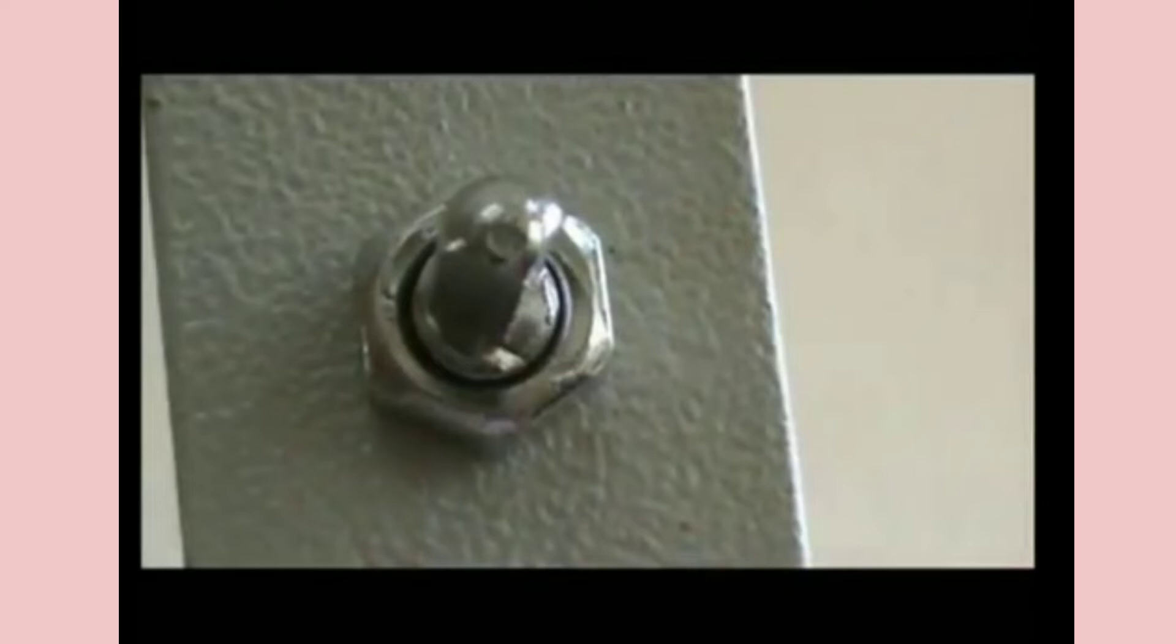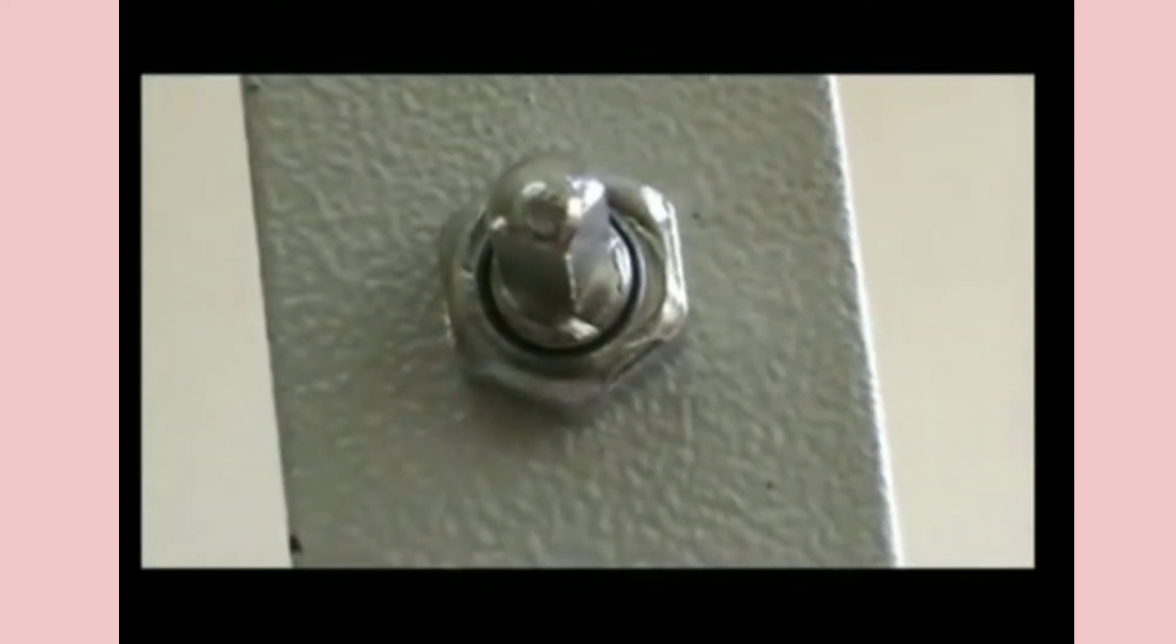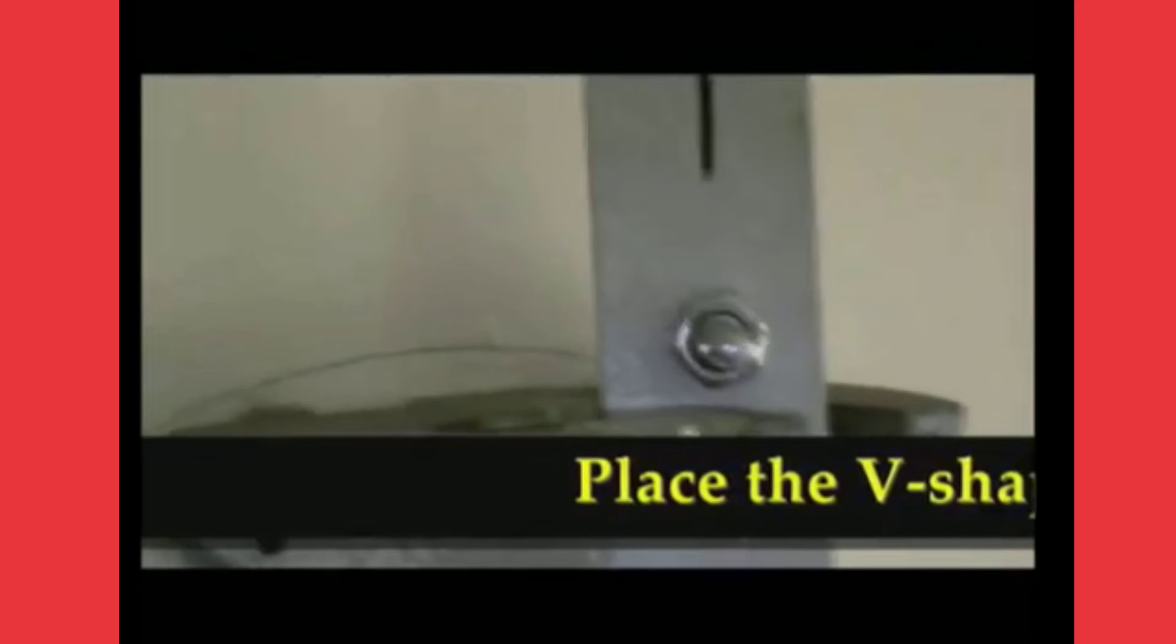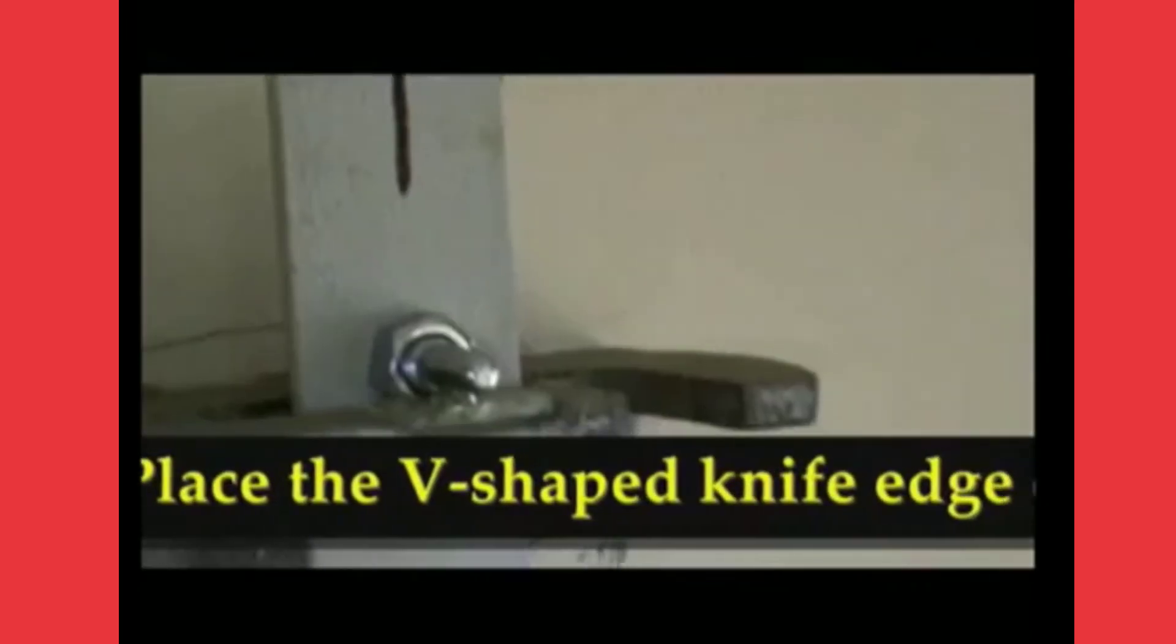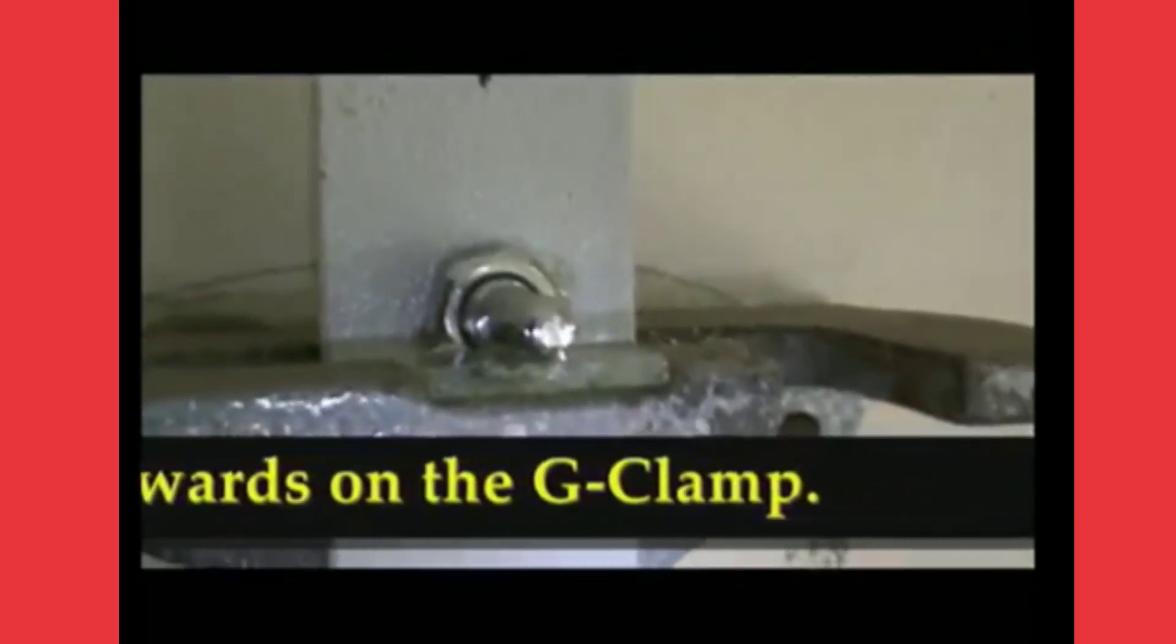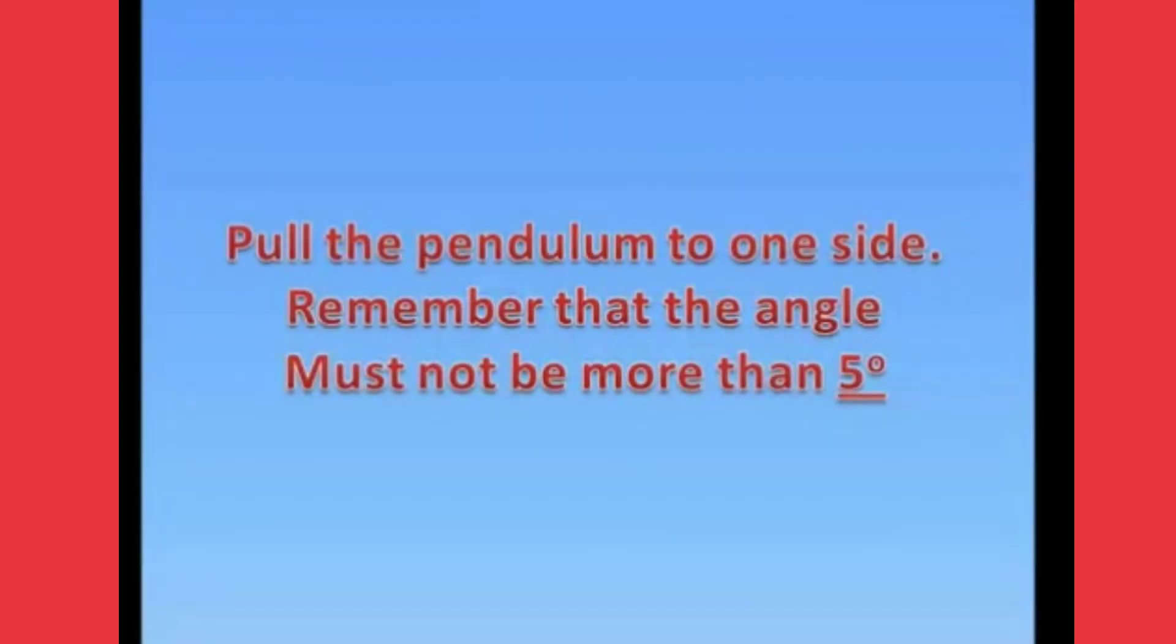After clamping it tightly using the bolts, place the pendulum on the G clamp. Place the V-shaped knife edge downwards on the G clamp. You can observe in the video the knife edge has to be suspended on the glass plate. Pull the pendulum to one side. Remember that the angle must not be more than 5 degrees.